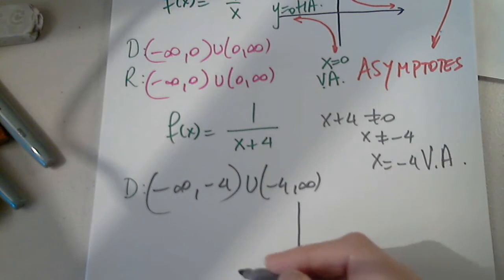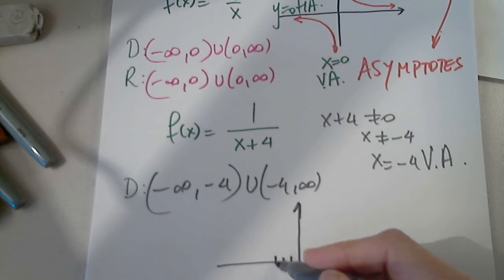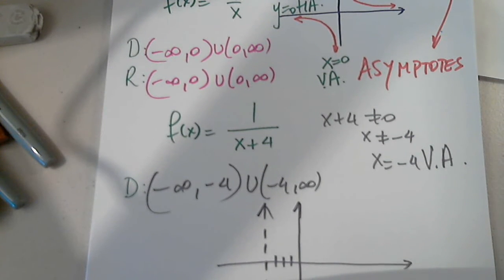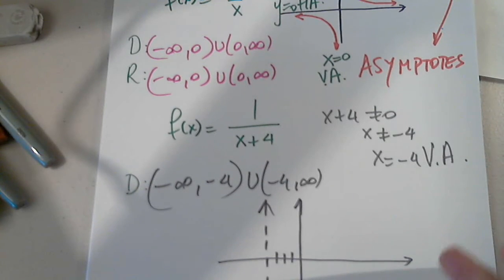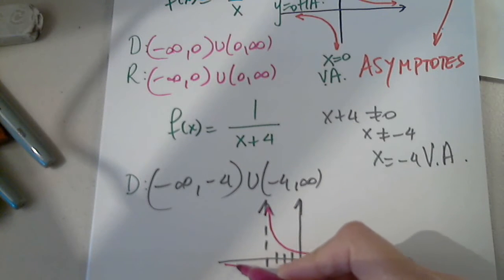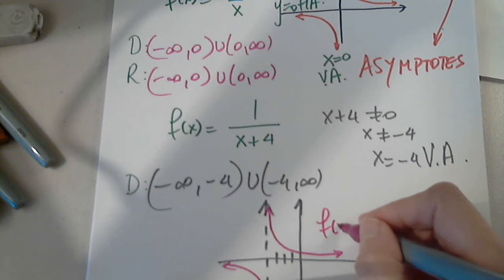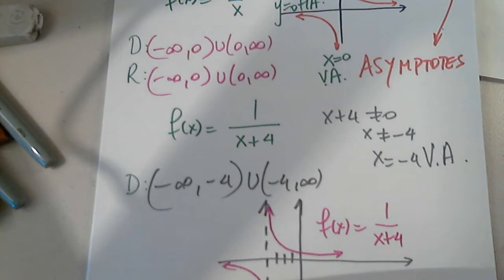When I shift the graph to the left, I shift its vertical asymptote first. It was initially at 0, now it's going to be at negative 4. So here's the graph: x equals negative 4 is the vertical asymptote. And this is the graph of f of x equals 1 over x plus 4.